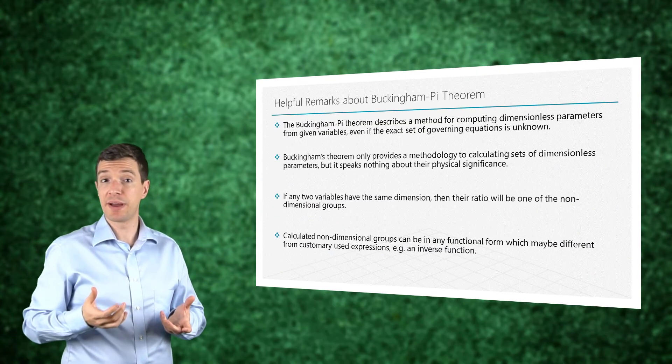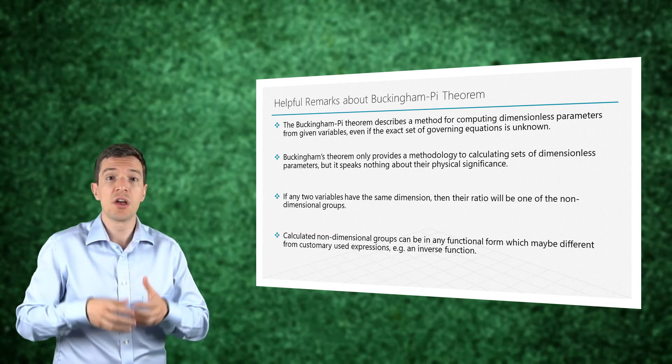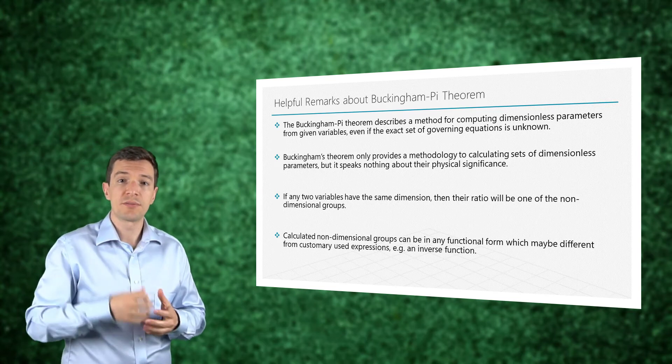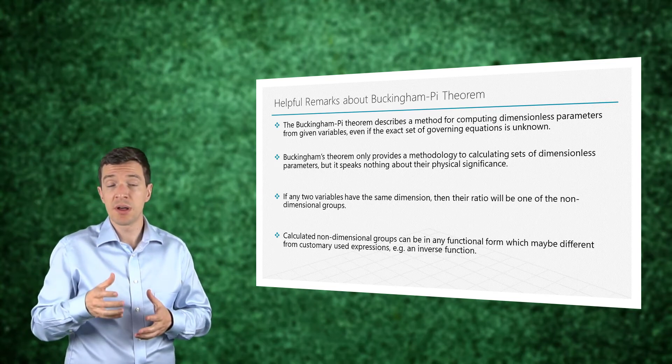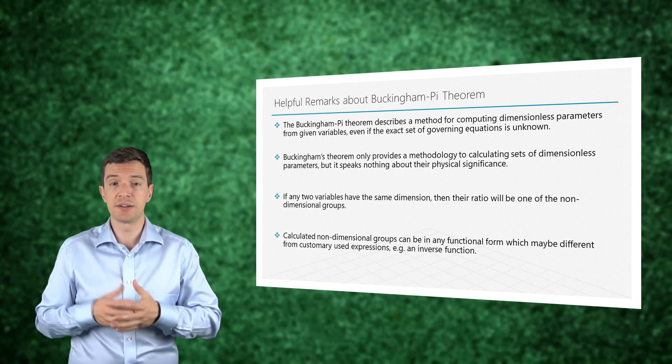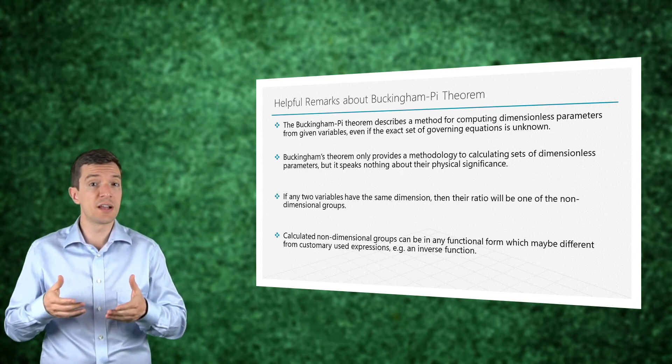As you can see, the Buckingham Pi theorem gives us a way to derive dimensionless parameters for a specific problem and given variables without relying on governing equations. The theorem provides a methodology to obtain dimensionless parameters without giving details of their physical significance.